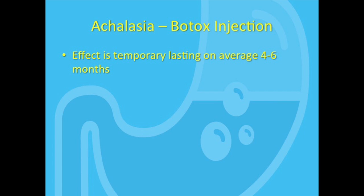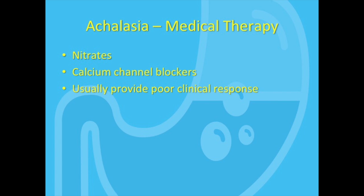Botox is a temporary muscle paralyzer. It is injected into four quadrants of the LES to weaken it. The effect is temporary, lasting on average about four to six months. The benefit for symptoms in patients with achalasia is slightly less than surgery or balloon dilation, but it is still a reasonable option for certain patients. It can be redone once the effect wanes, but with time there is less and less benefit with repeat injections. Medications such as nitroglycerin spray and calcium channel blockers can also relax the lower esophageal sphincter, but unfortunately they are not very effective and are usually our last option.